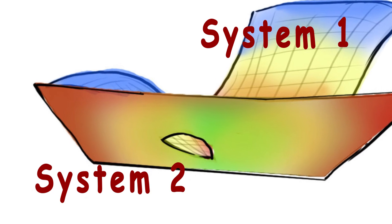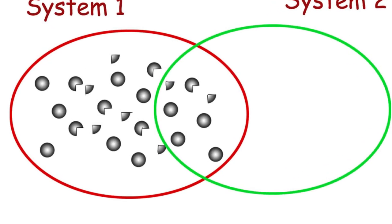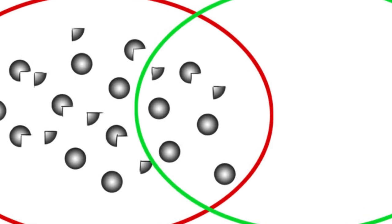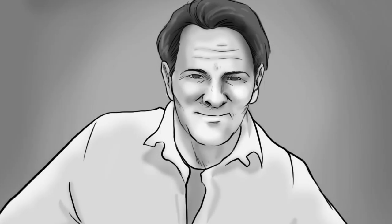All objects of a system involve a non-local collective cooperation with all objects within the same system or in other systems. To describe such real systems, non-local statistical distribution function is applied.